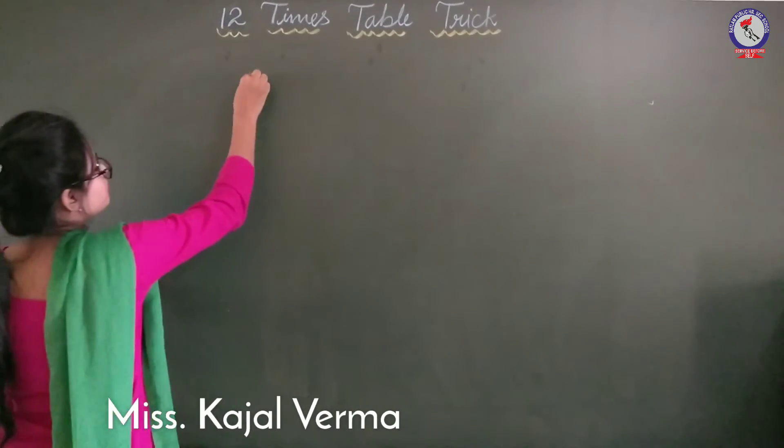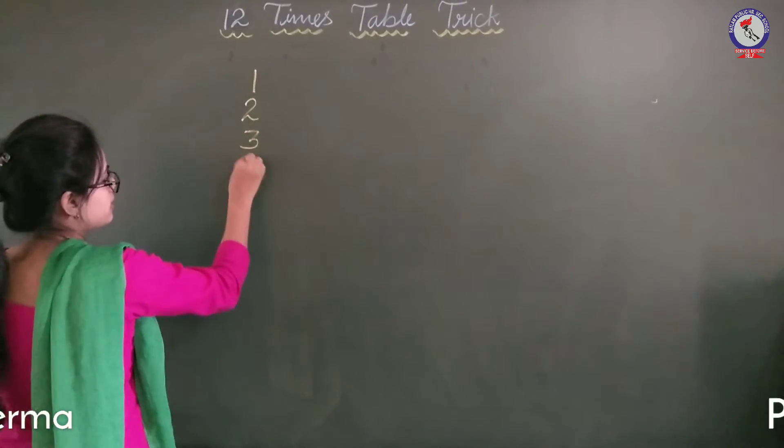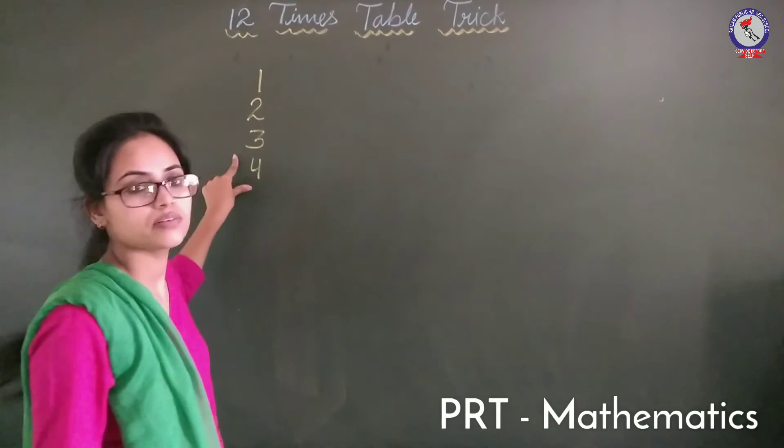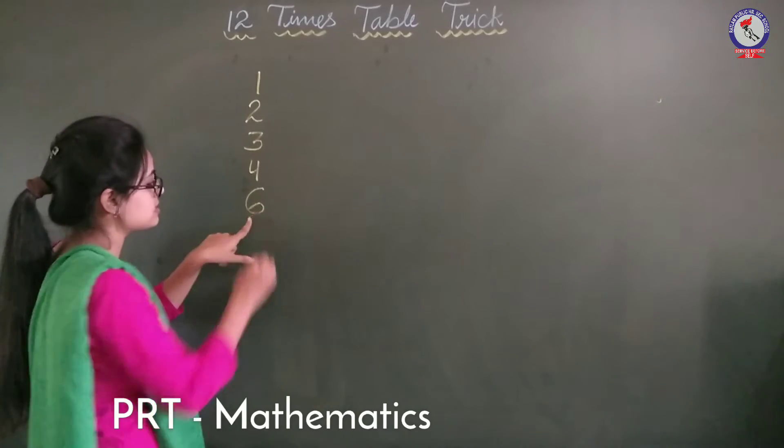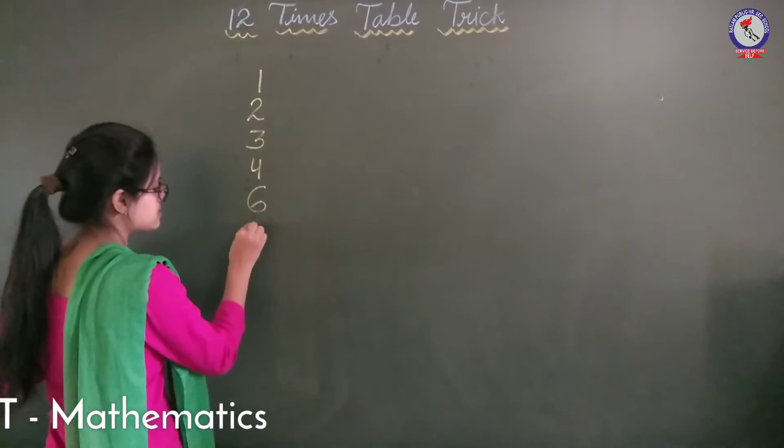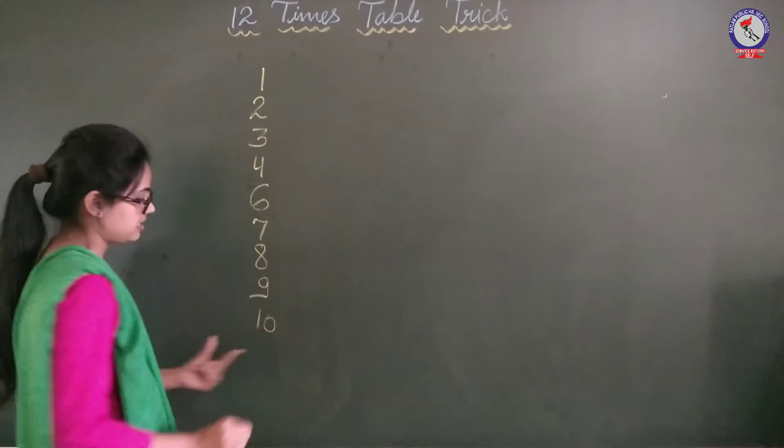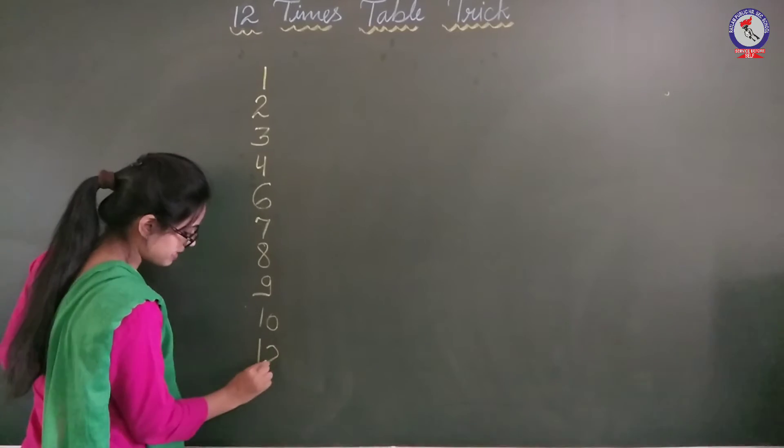Firstly we will arrange this from 1, 2, 3, 4. But after 4 we will skip 5. Now we have calculated 6, then 7, 8, 9, 10. Now after 10 we will skip 11 and let's write 12.